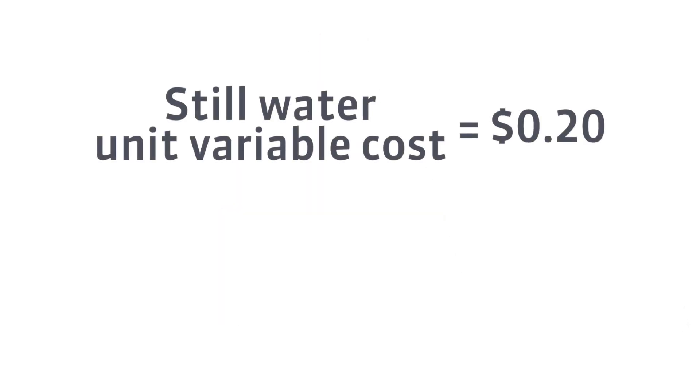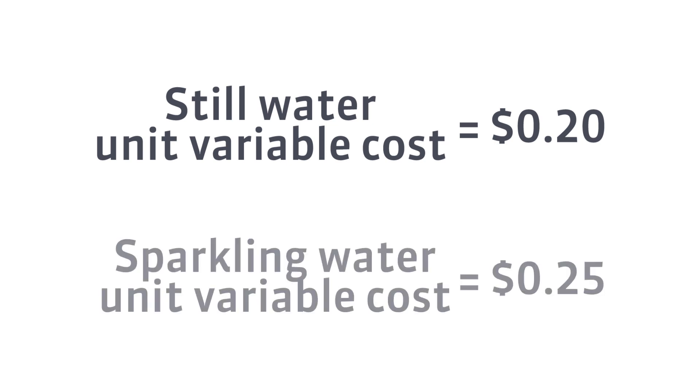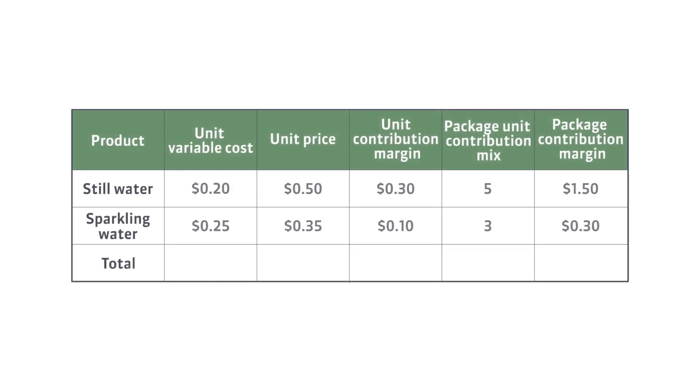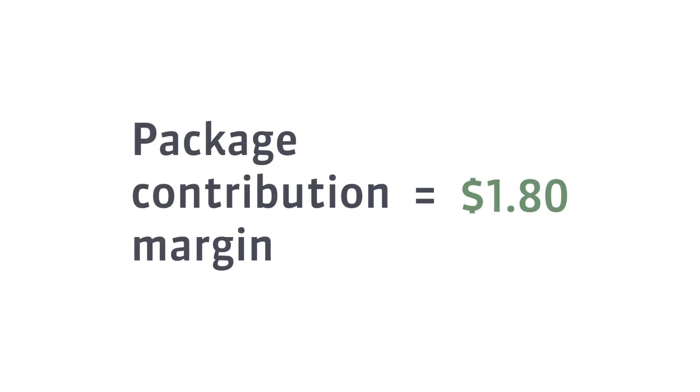To compute package values, we need the sales mix, the individual product prices, and the individual variable costs. Assuming the unit cost of still water is 20 cents and sparkling water is 25 cents, we can calculate the contribution margin of the package. From that point on, we have a contribution margin per unit — our package — and we can use the fundamental break-even equation to determine the number of packages needed to break even.